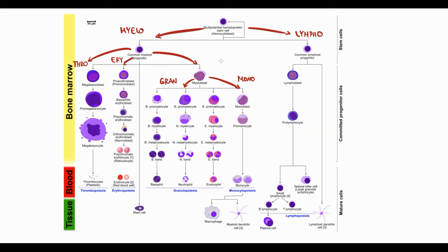When JAK2 kinase mutation occurs at the stage of a stem cell or common myeloid progenitor cell, it simply increases the rate of production of myeloid cells. The production of red blood cells increases the most, the production of megakaryocytes greatly increases, and the production of all other myeloid cells increases too. So, as in normal conditions, all cells are produced, but such a very fast rate of production is certainly pathological.